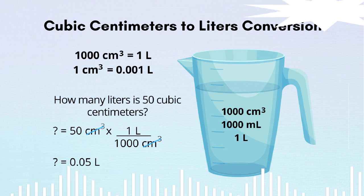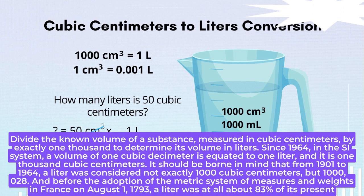Step 1. Divide the known volume of a substance measured in cubic centimeters by exactly 1,000 to determine its volume in liters. Since 1964, in the SI system, a volume of 1 cubic decimeter is equated to 1 liter, and it is 1,000 cubic centimeters.